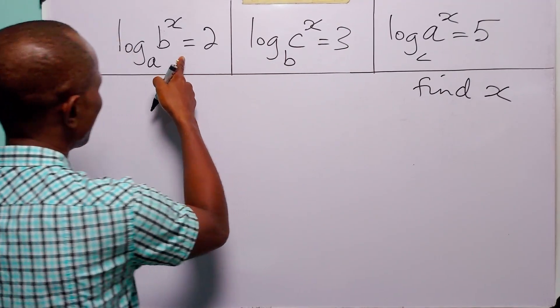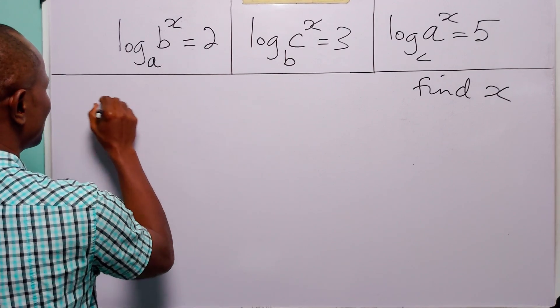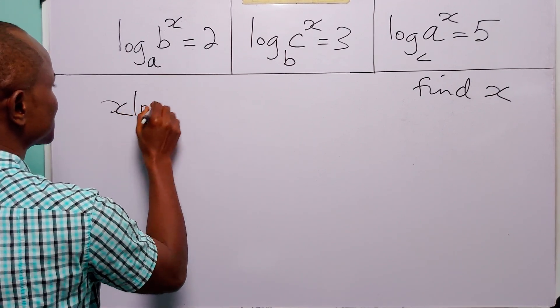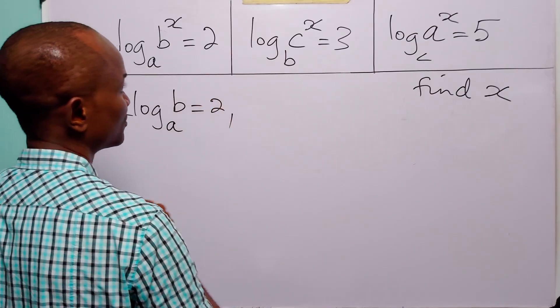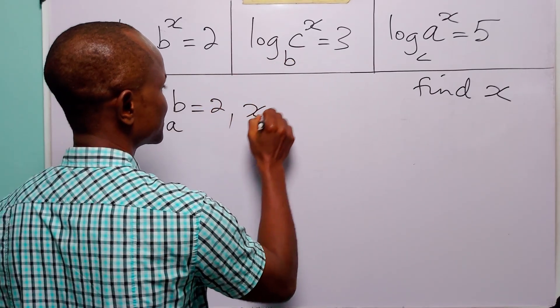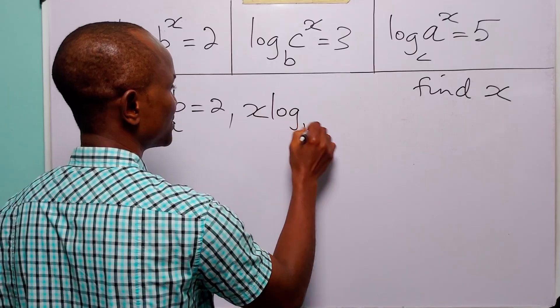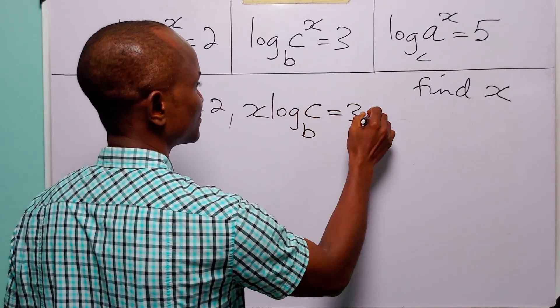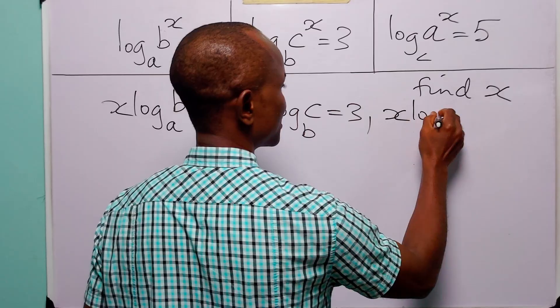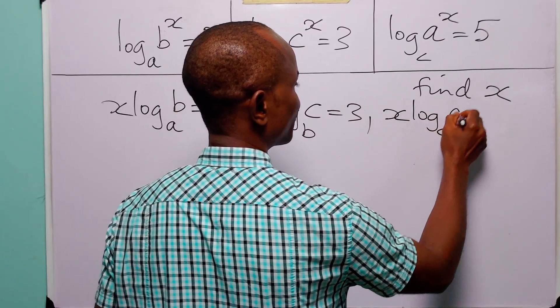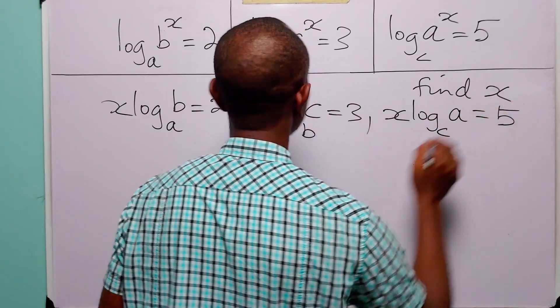When we apply the power rule to the first equation we have x times log to base a of b is equal to 2. In this case we have x times log to base b of c is equal to 3. And in this case we have x times log to base c of a is equal to 5.